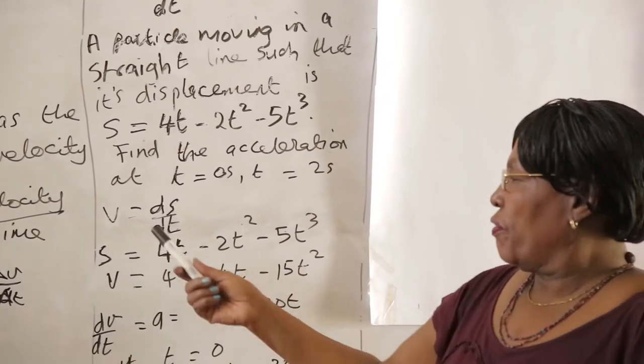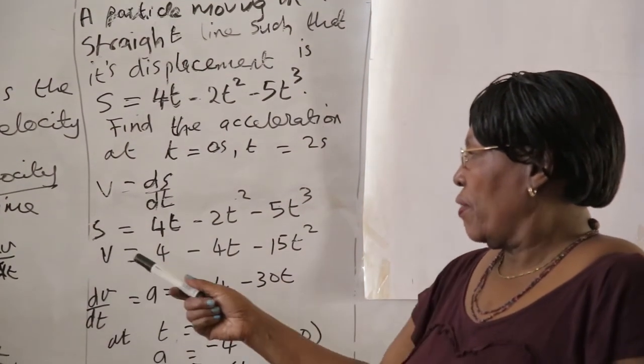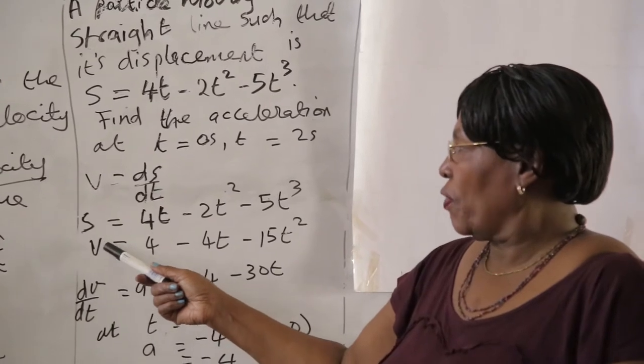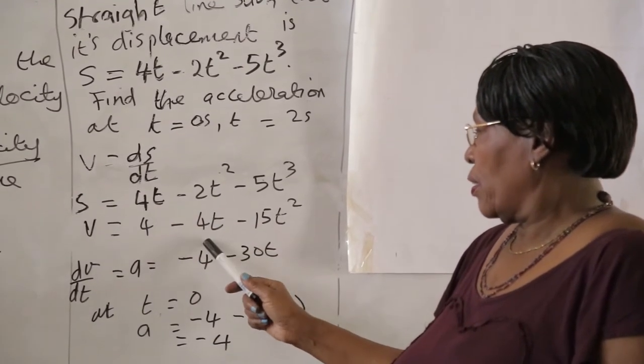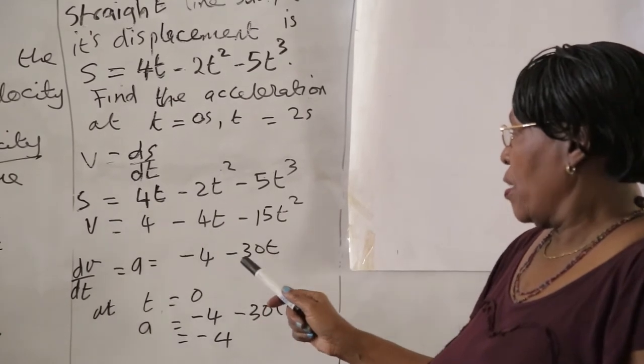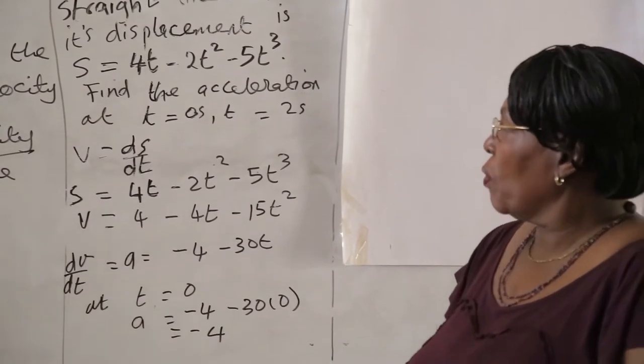We have said that V is equal to dS/dt, and therefore if this is S, the differential function of S, dS/dt, is 4 minus 4t minus 15t squared. And that means then we want to find the acceleration.